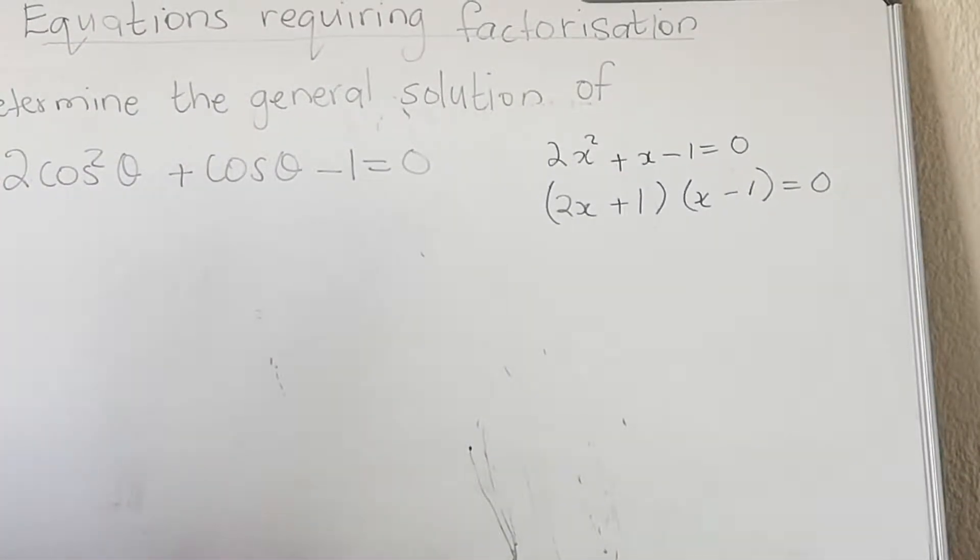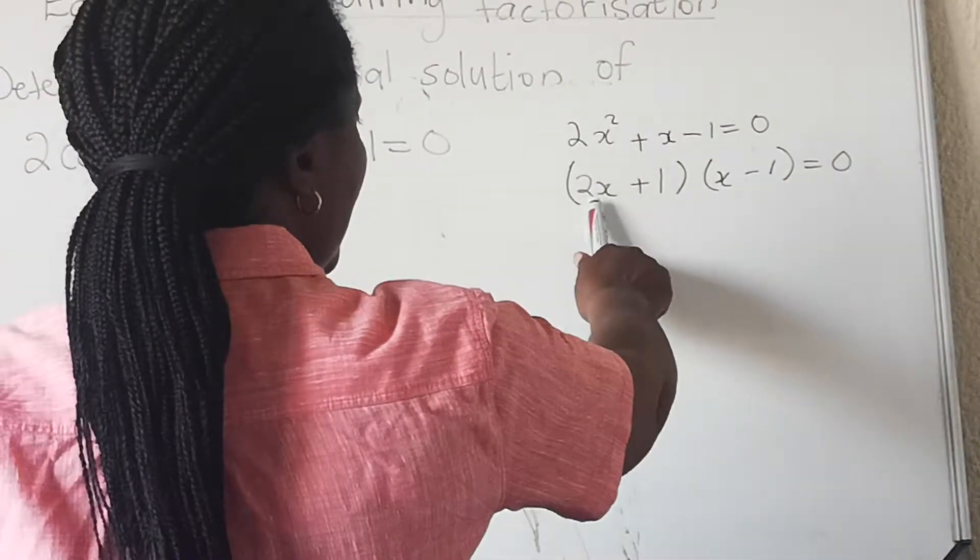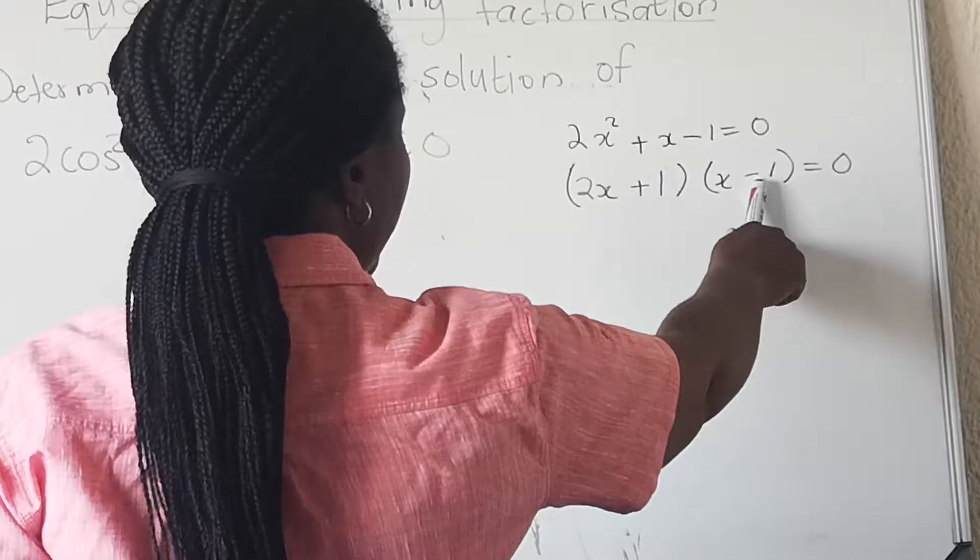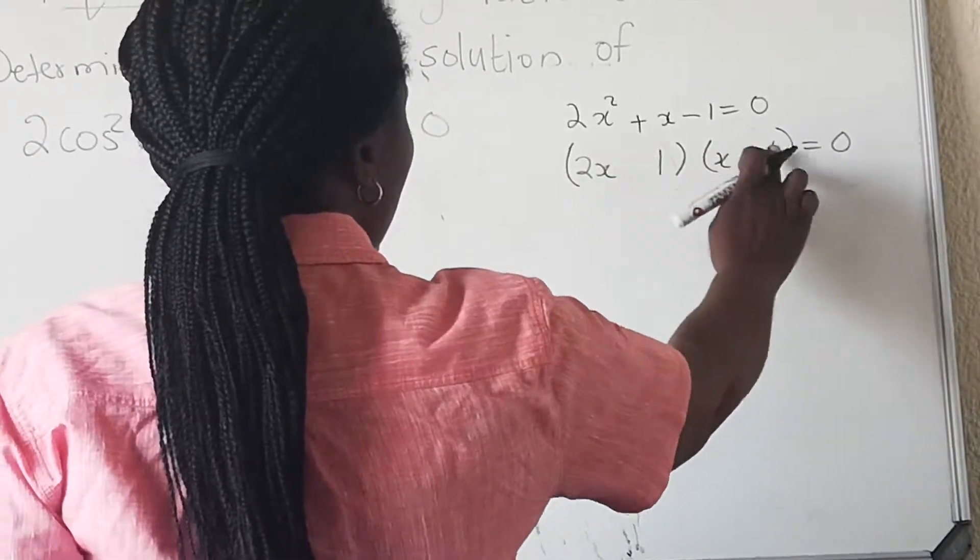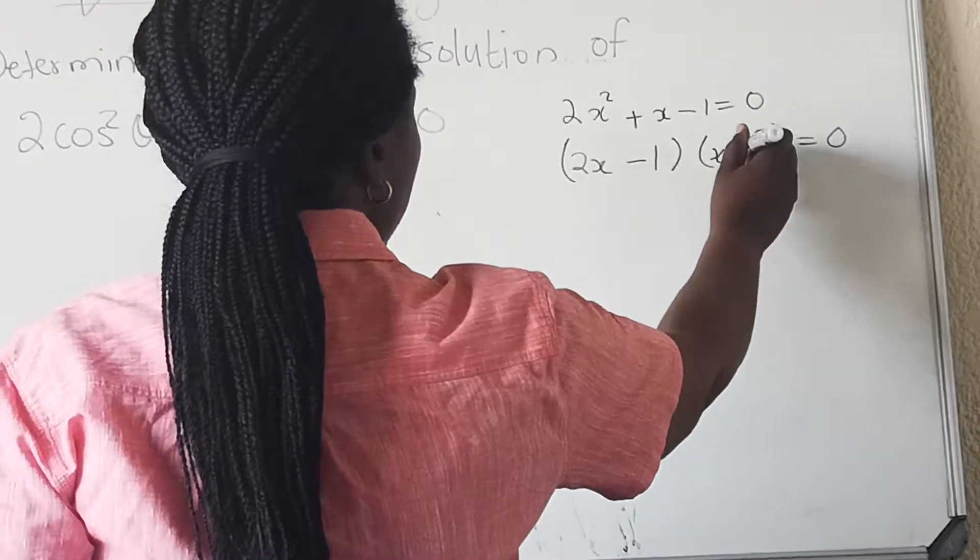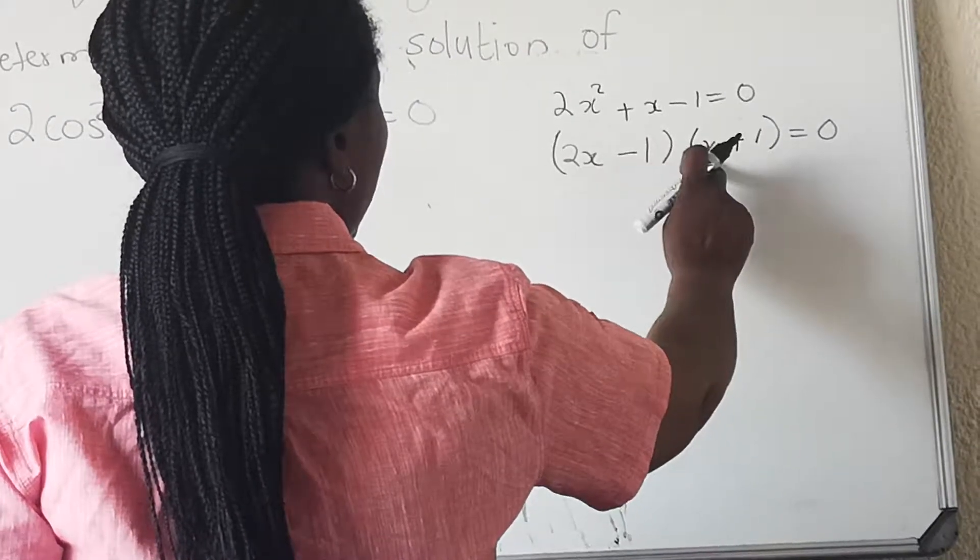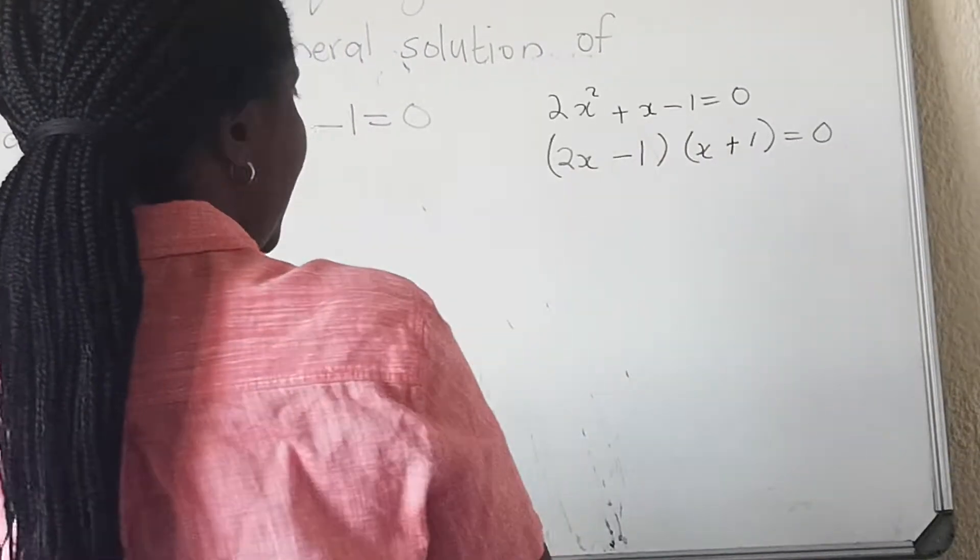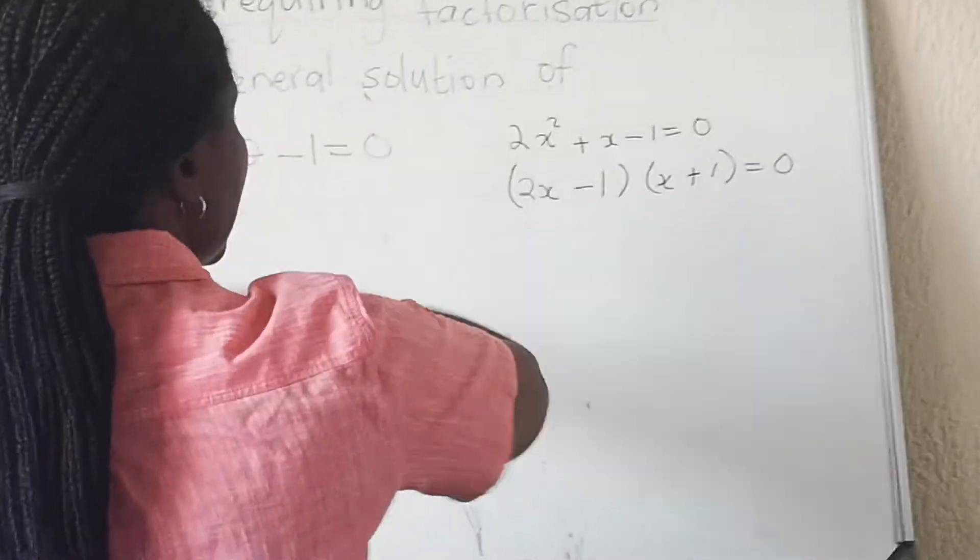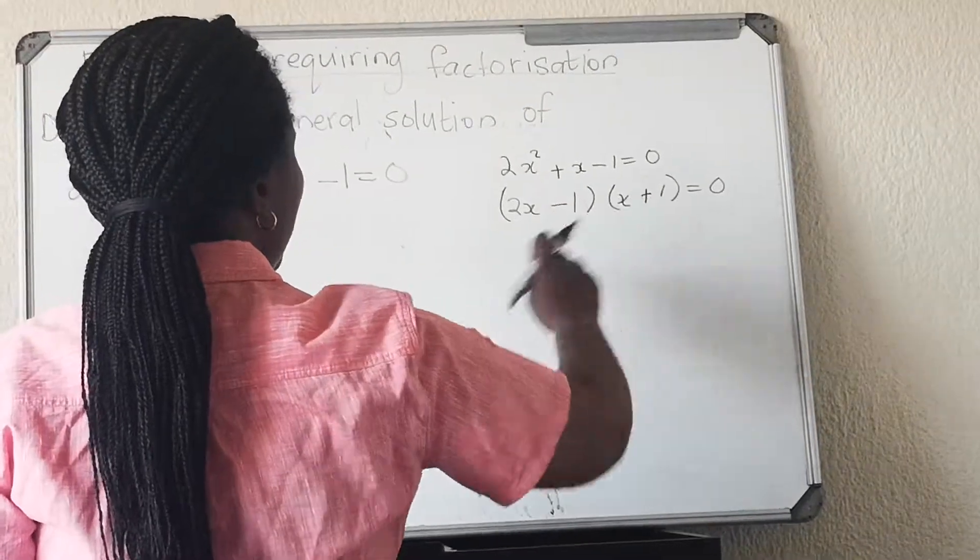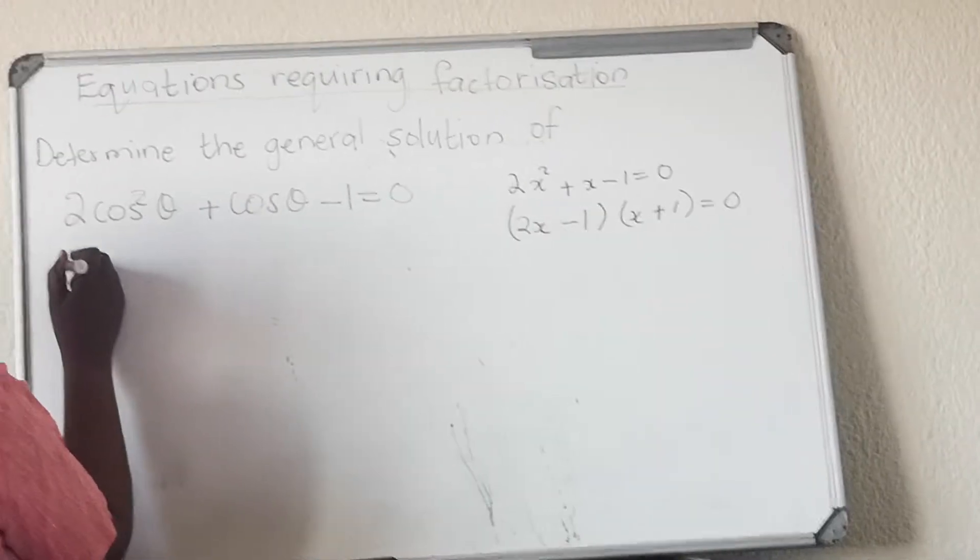It looks like my factors are wrong, let's check. Two times one will give me two, but it should be minus. Two times that will give me two and that will give me minus, and I'm going to be plus x. Now when you factorize wrongly, the answers are all going wrong. So you need to check your factorization if it's correct.